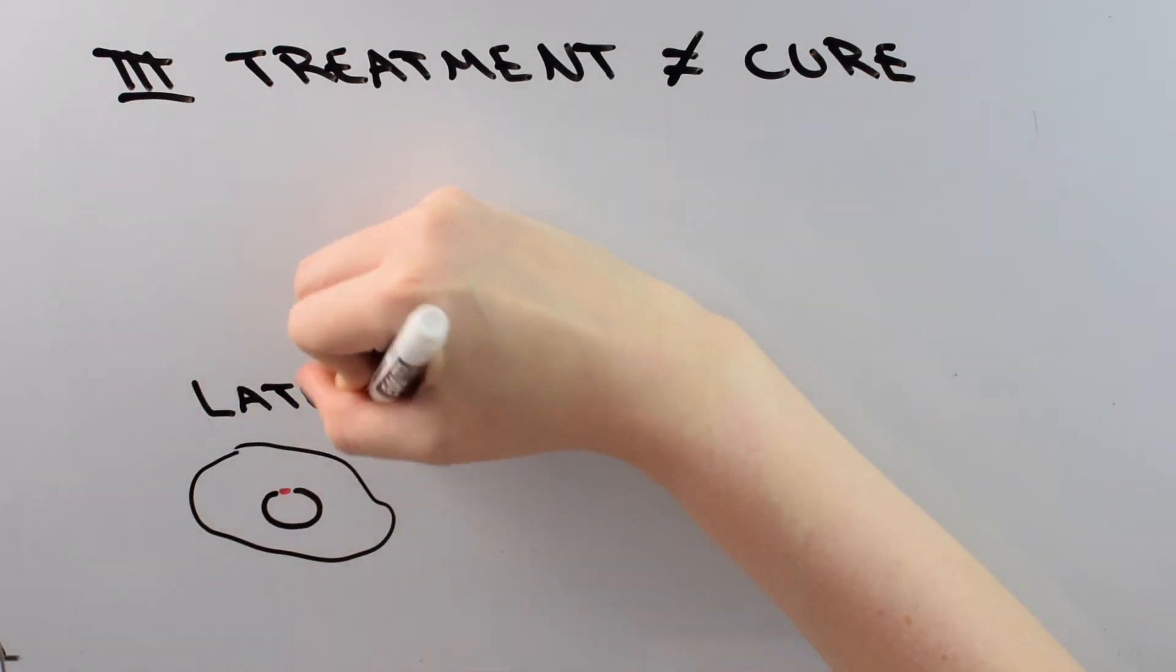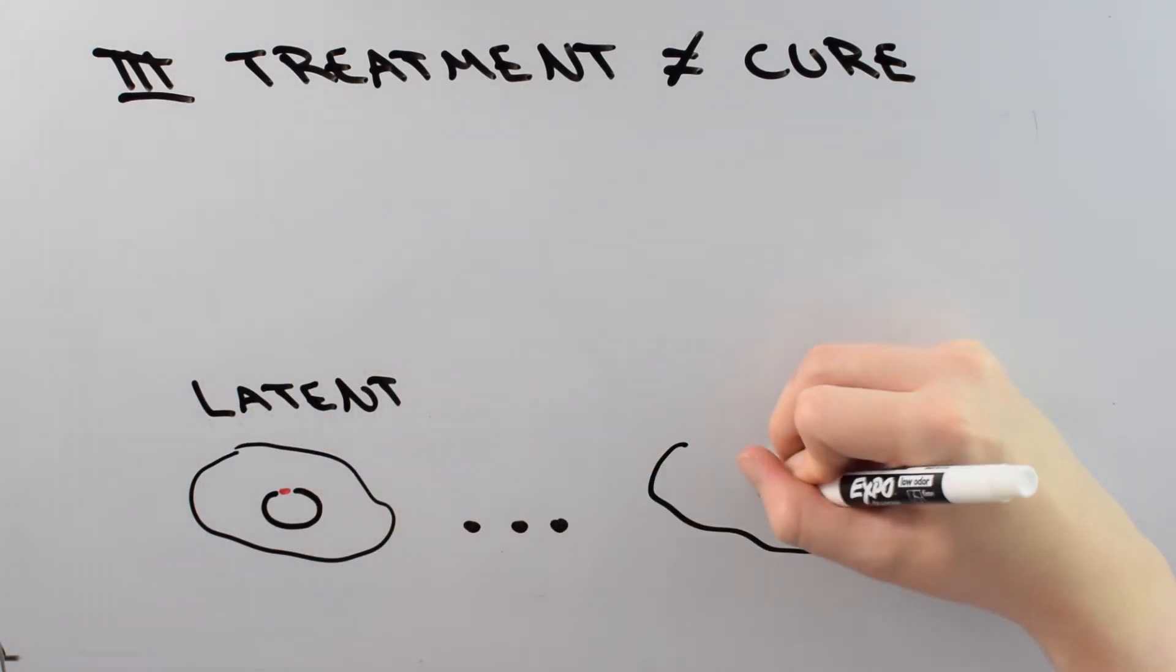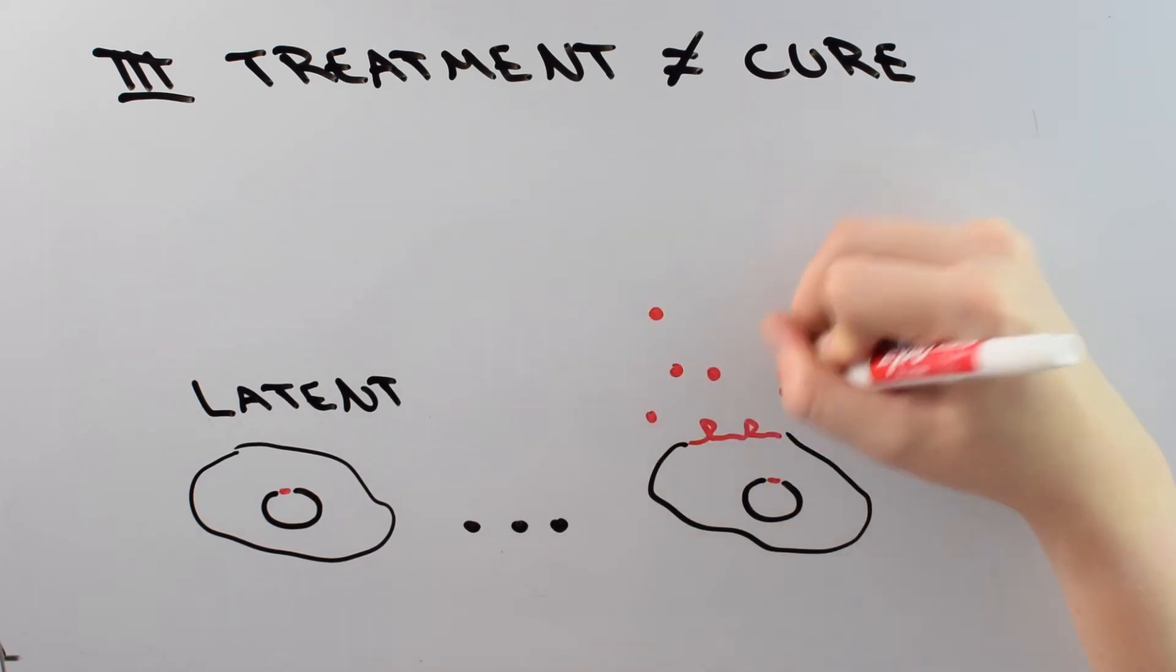And although latent cells aren't making any HIV right now, at any point they can become active and start making lots more HIV. And if you don't have the inhibitors around when that happens, you can get sick all over again.